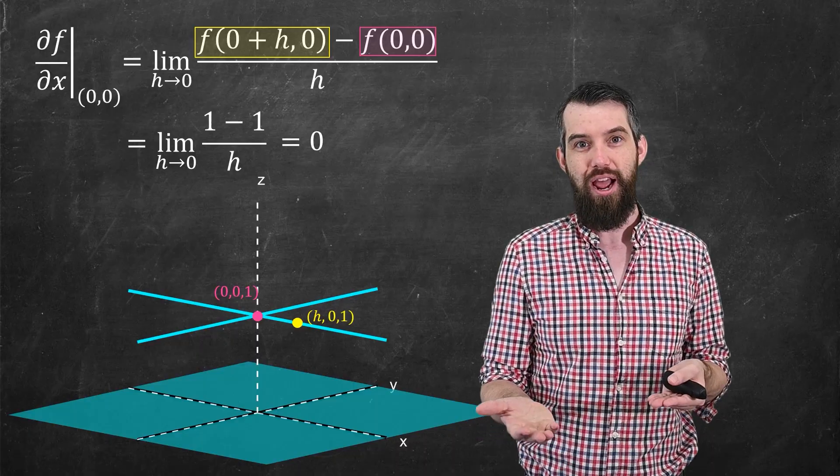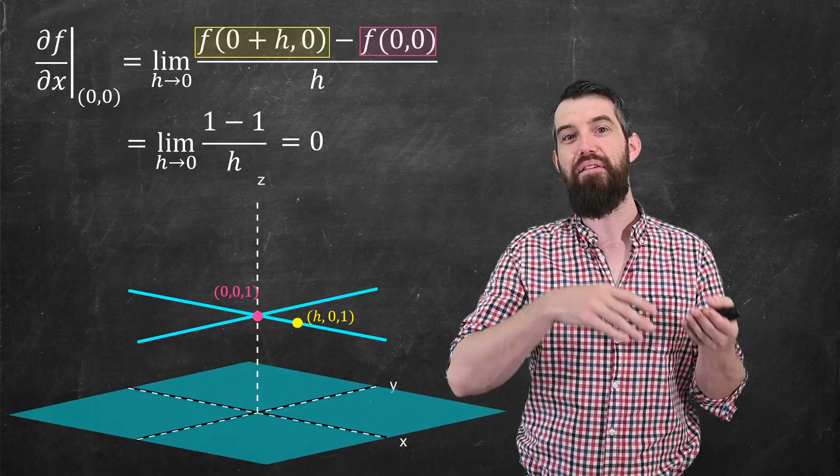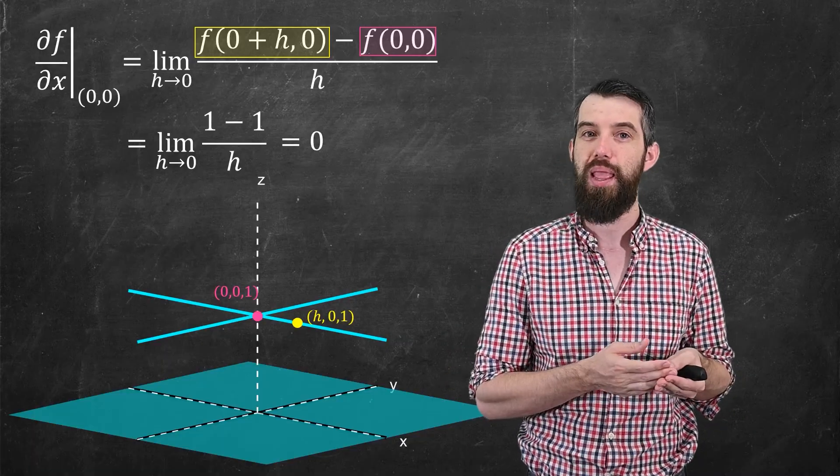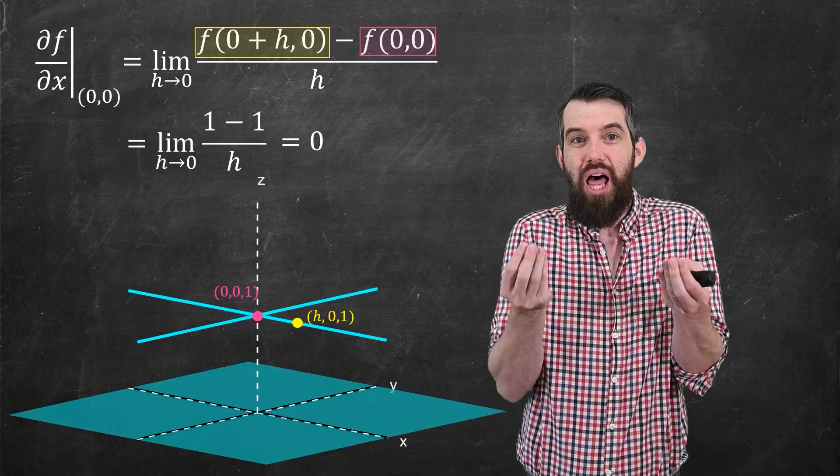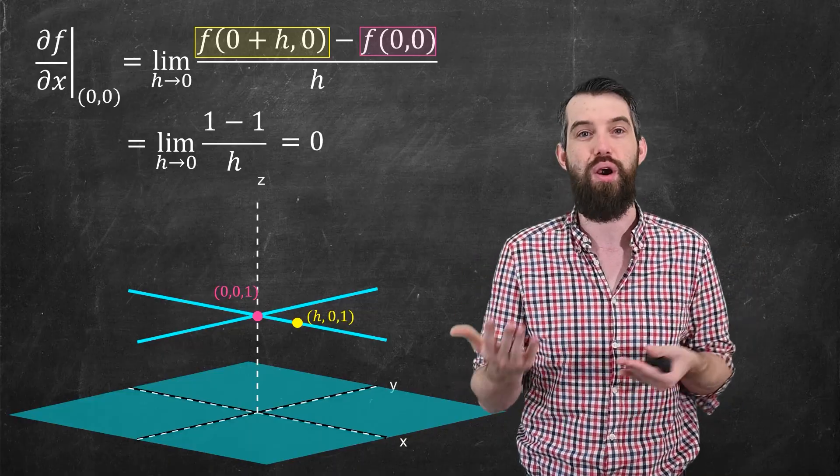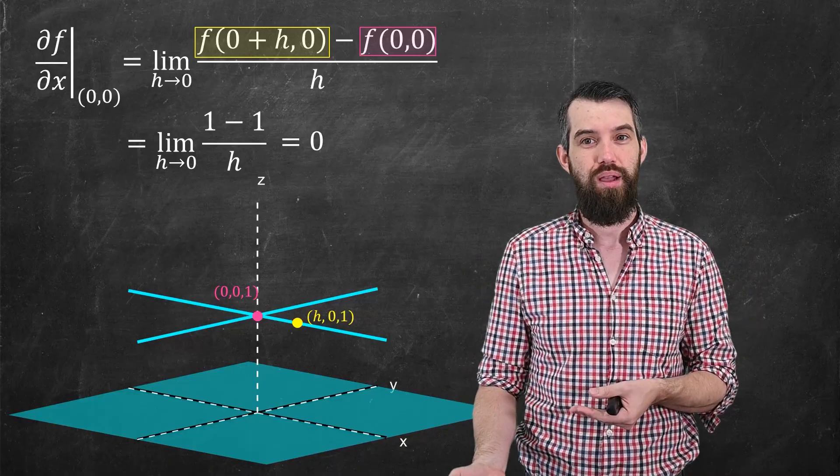The partial derivative is the slope of that secant line between these two points, in the limit as h goes to 0. But because these two points lie on a horizontal line, the slope between them is just 0, another argument why this partial derivative makes sense to just be 0.